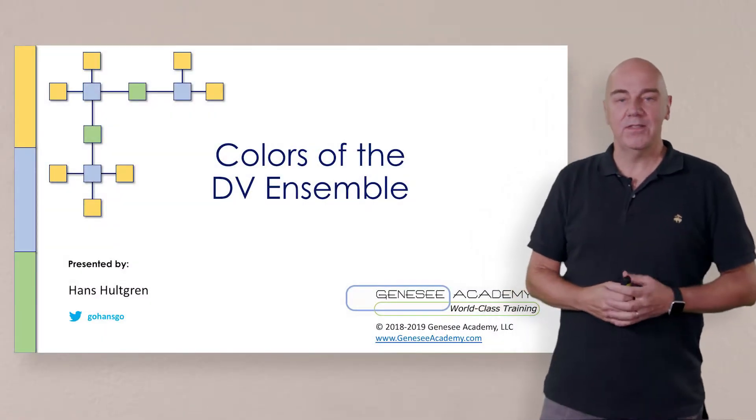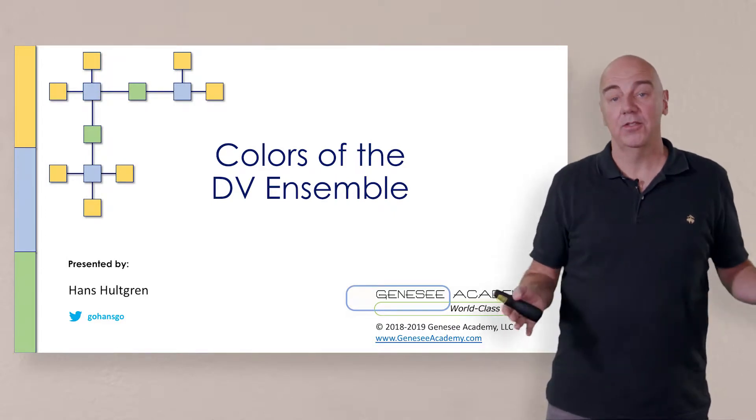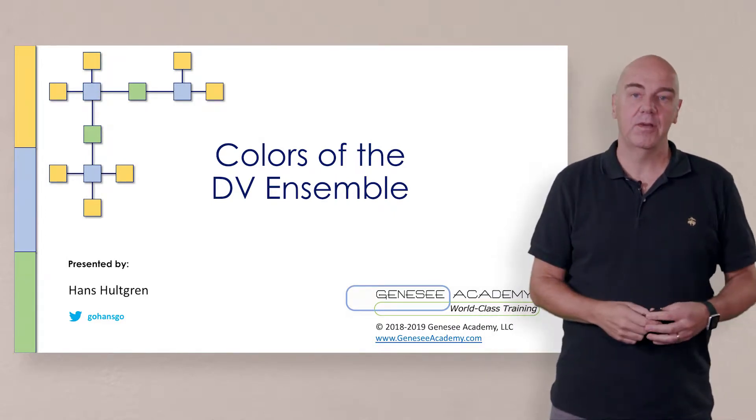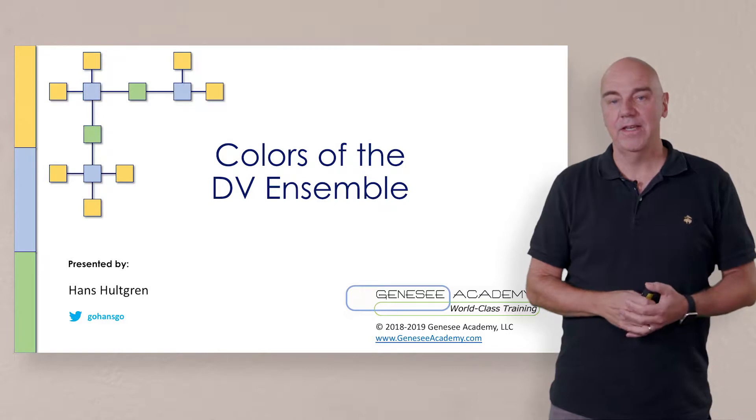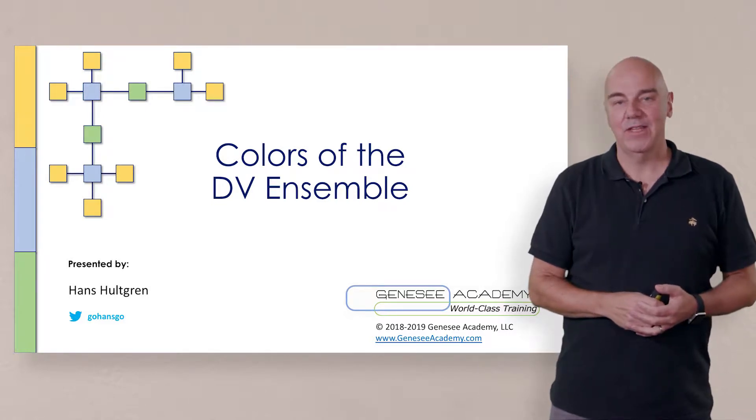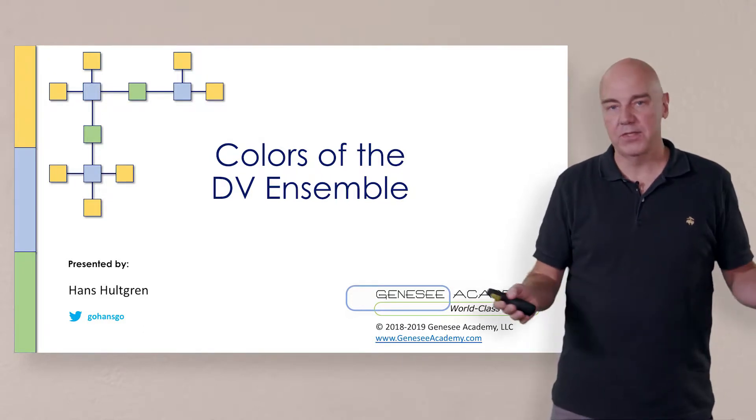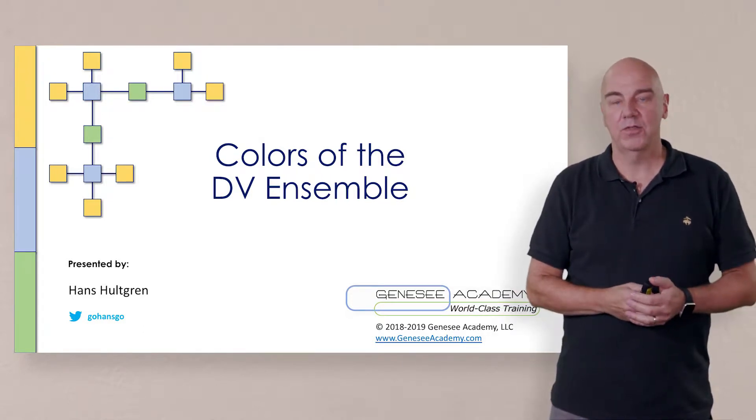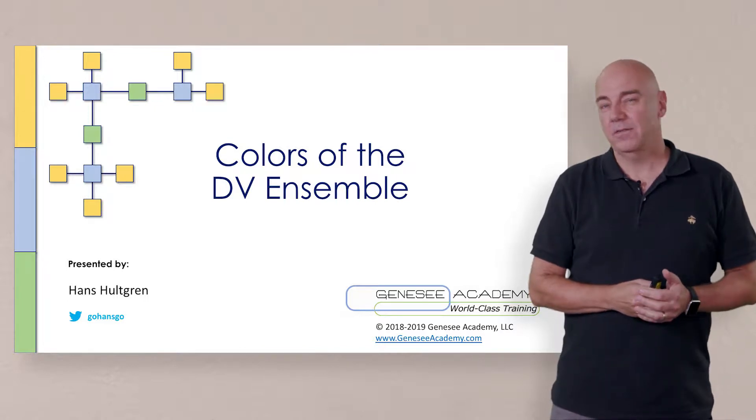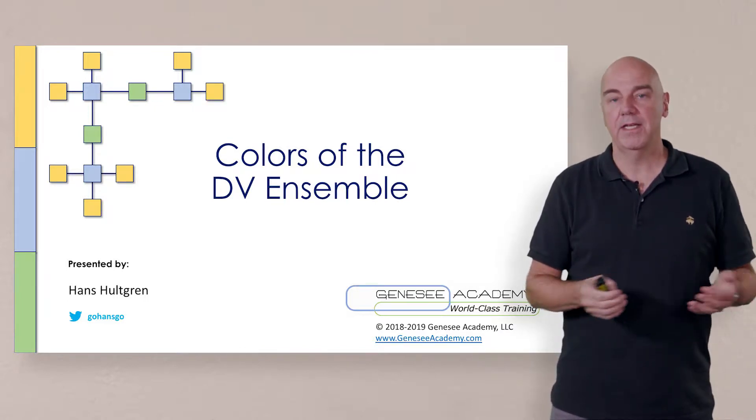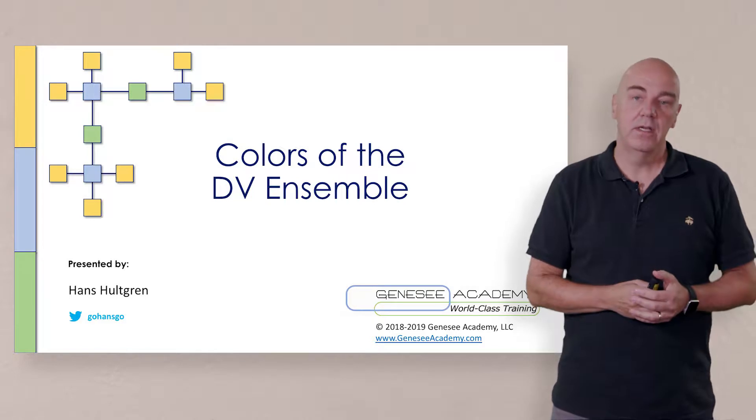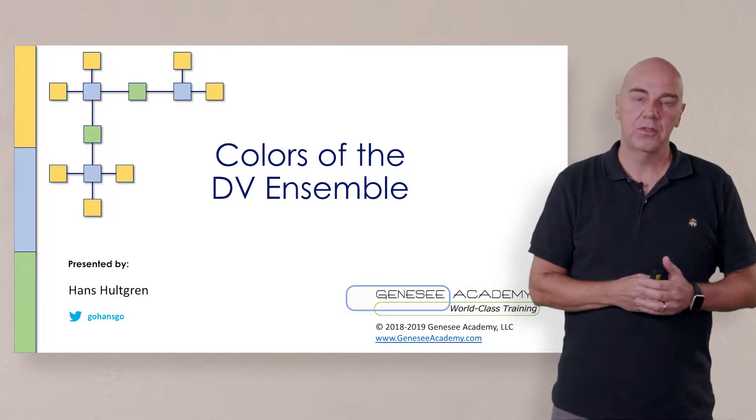Okay, welcome back. So in this session, we're going to talk about the colors of the DataVault Ensemble. You've probably noticed the blue, yellow, and green colors associated with DataVault and Ensemble modeling pretty much anywhere you've seen or read about it. This is one of those forms of analysis that forms a foundation of how we understand how this pattern actually works. So let's take a quick look as to where this came from.